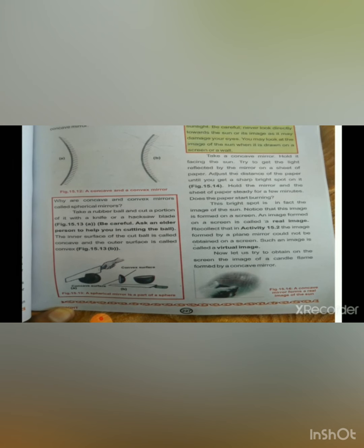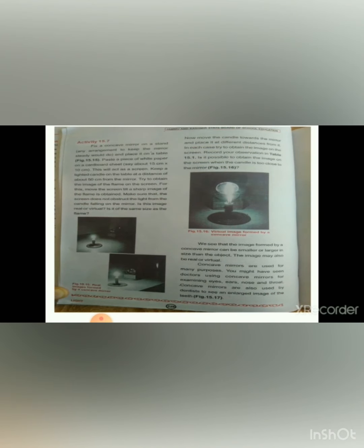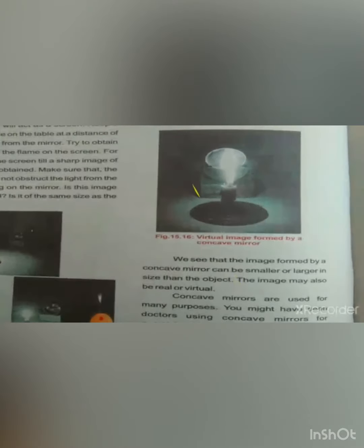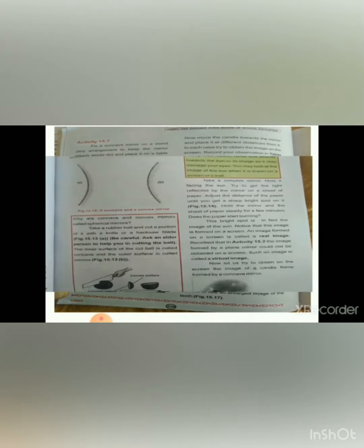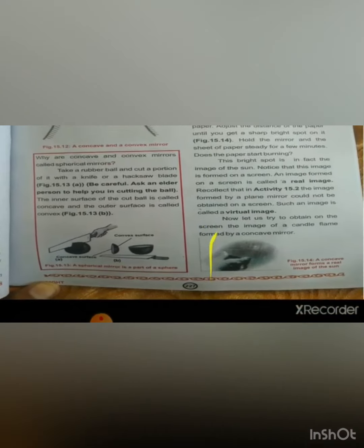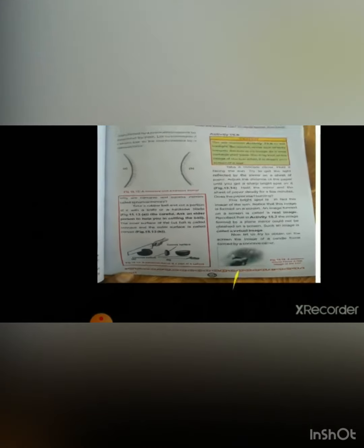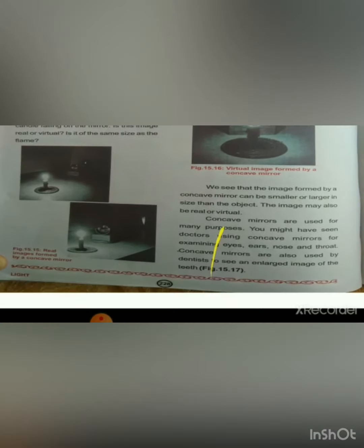Let's start reading now. We will try to obtain on the screen the image of a candle flame formed by a concave mirror — we'll see how the image will be formed. This is Activity 15.7. Let me check the page — page 227 is showing, but today we will read page 228.